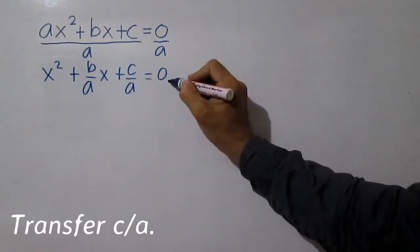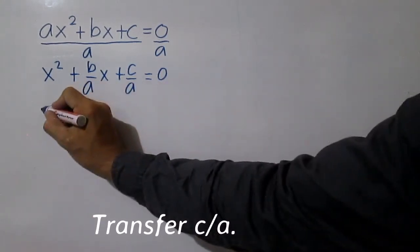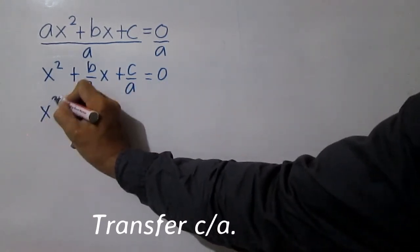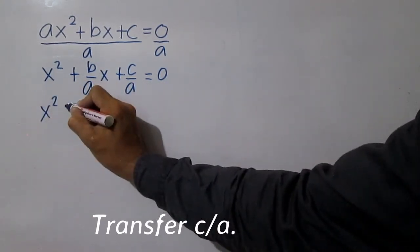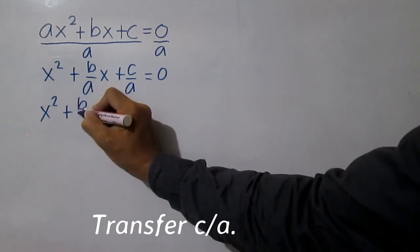Transfer c over a to the right side of the equation by the subtraction property of equality.